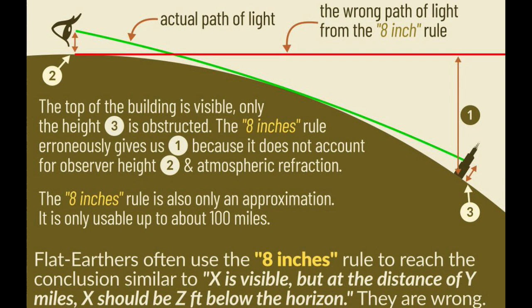In this episode, we're going to take a close look at the 8 inches per mile squared rule of thumb to determine the drop height due to the curvature of the earth. This is something a lot of flat earthers use very incorrectly, and it leads to all kinds of confusion because flat earthers think they're proving the earth is flat by saying I can see this thing that shouldn't be seen at this distance, when in fact they're just using the rule incorrectly, and we're going to really go over that.